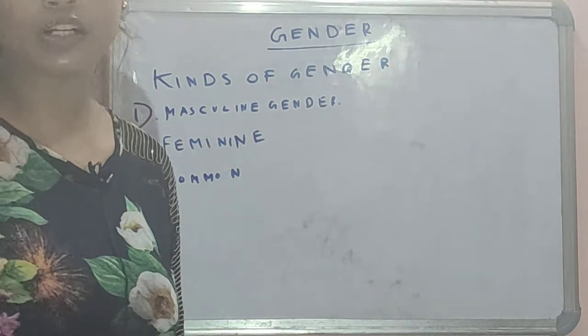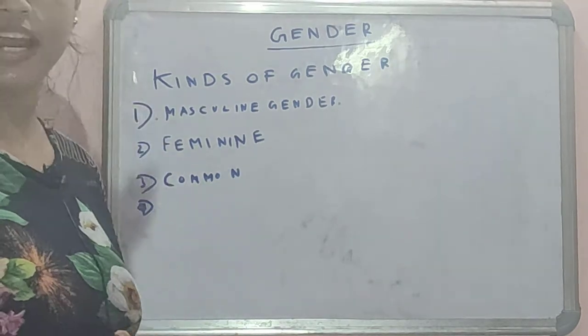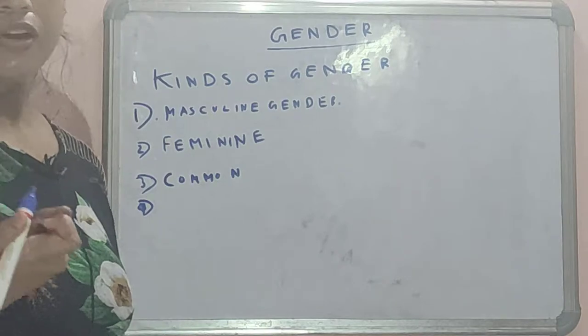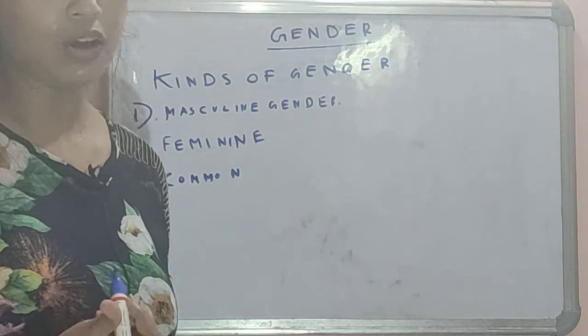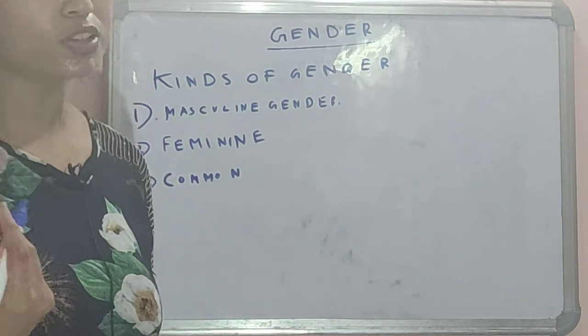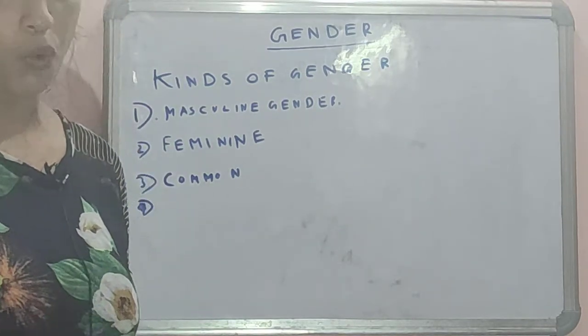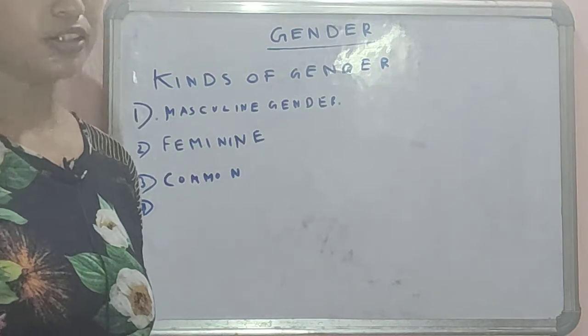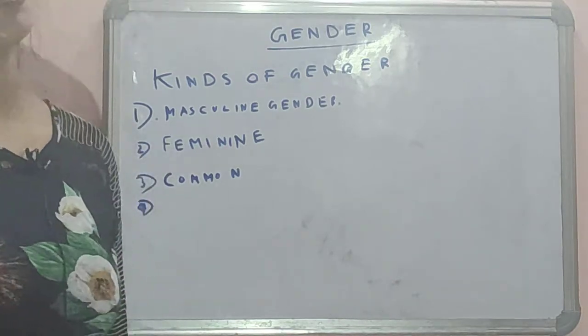That means we can't distinguish them. Can we distinguish a pen? Is it male or female? Or a box? Or a chair? No, we can't. So these are very simple to understand.